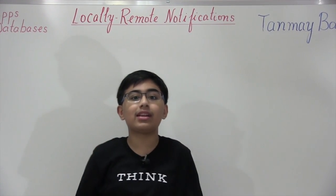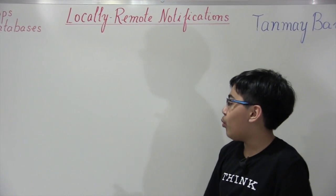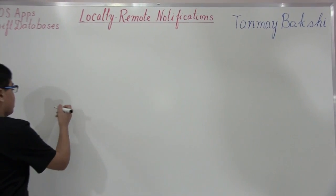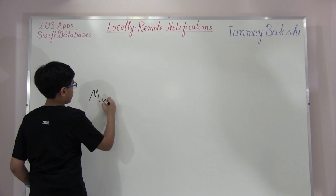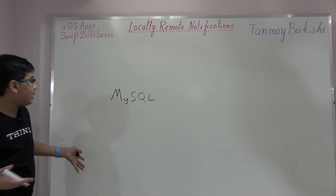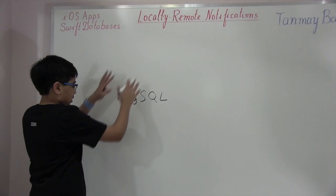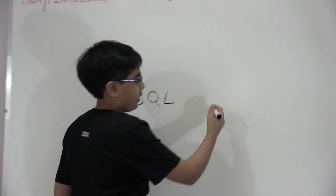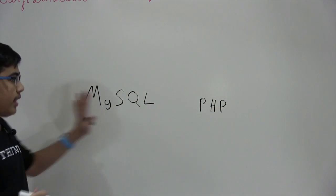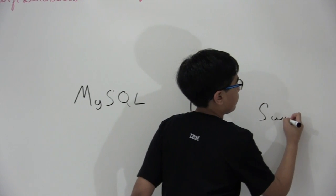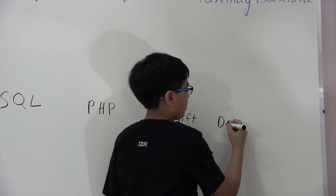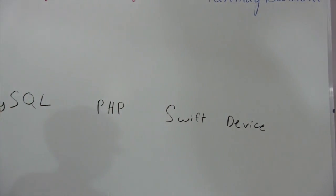Let's get right into it. As you all know from the Swift databases series, we have a MySQL database. So I'm going to pretend that we have a MySQL database over here. On the other side, in the middle, we're going to have PHP. Next we have Swift, and finally we have the owner's device.